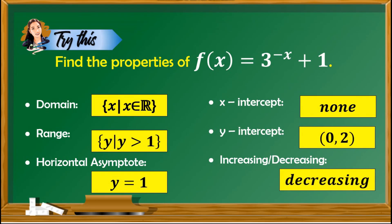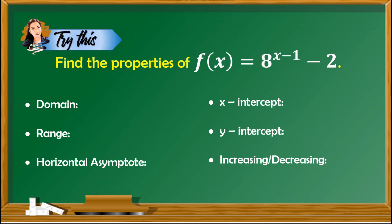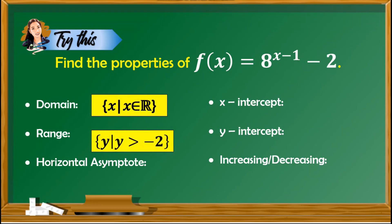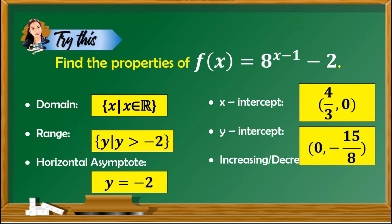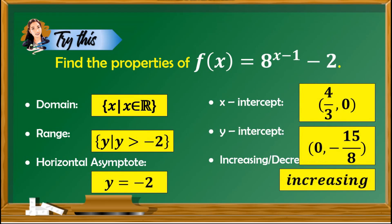Did you get all of that? Very good. Try another problem. Let's check your answers: the domain is the set of real numbers; the range is y is greater than negative 2; the horizontal asymptote is y equals negative 2; the x-intercept is (4 thirds, 0); the y-intercept is (0, negative 15 over 8); and the behavior is increasing. Did you get this right? Great job.